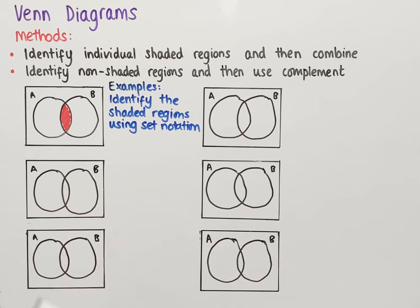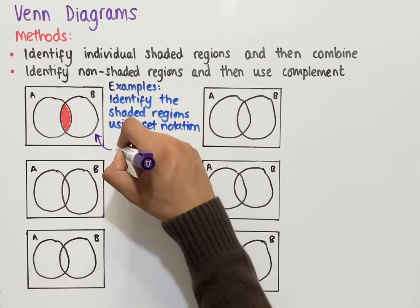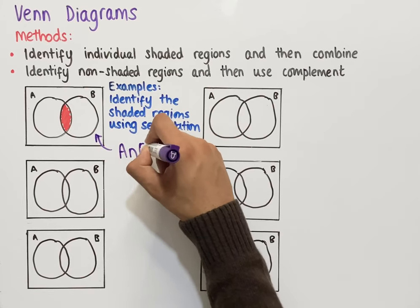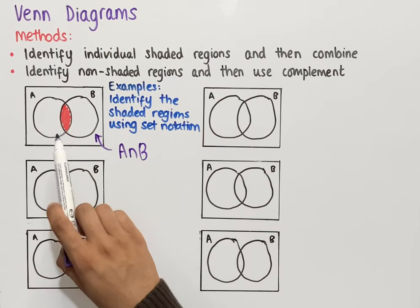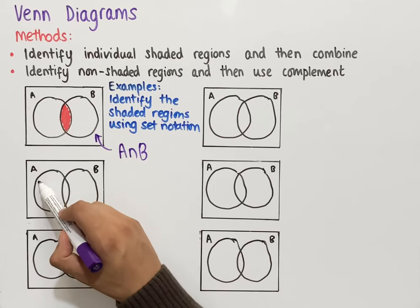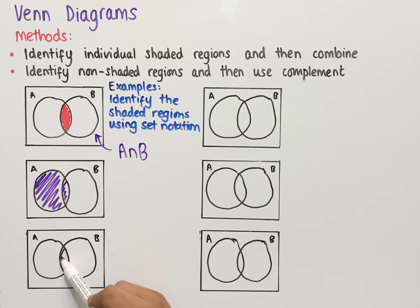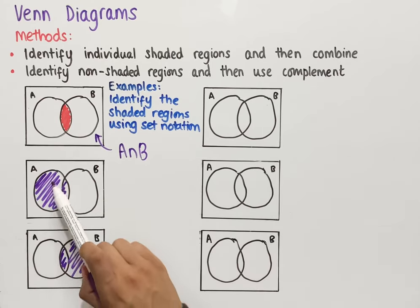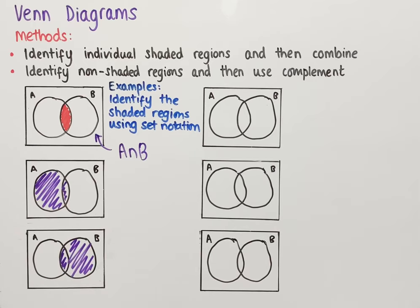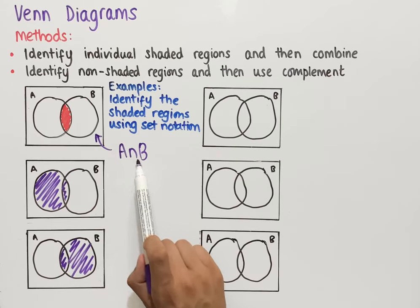This is A intersect B. If we look at each of the individual circles, we have A shaded in one Venn diagram and B shaded in another. Comparing these two, the bit in the middle is the intersection or overlap between A and B, so the set notation for this region is A intersect B.